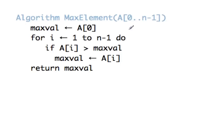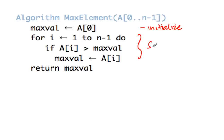Here is the pseudocode for this algorithm. We have an algorithm called MaxElement which takes an array of size n with indices 0 to n-1. We first initialize our maximum value to A[0] and then we scan. The structure is fairly straightforward.